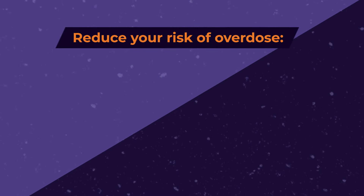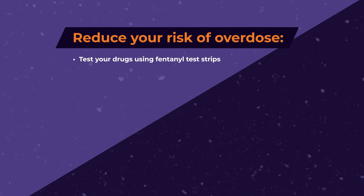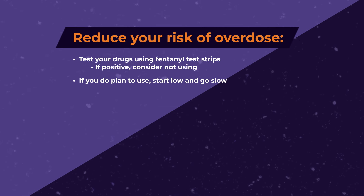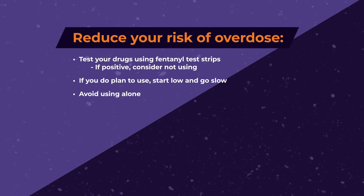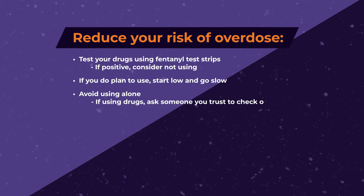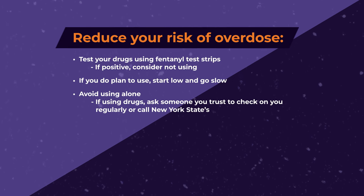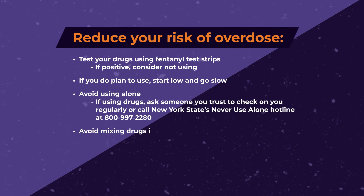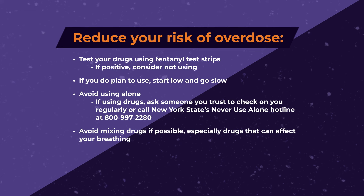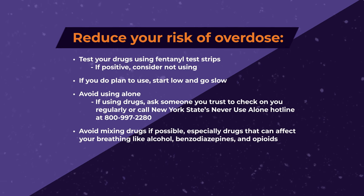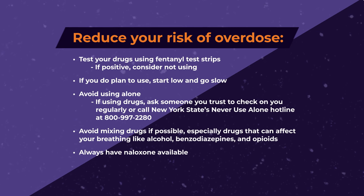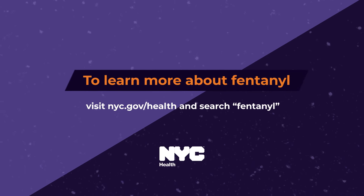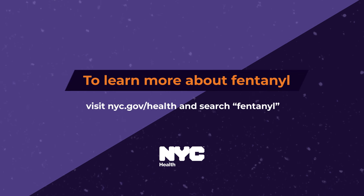Reduce your risk of overdose — test your drugs using fentanyl test strips. If positive, consider not using. If you do plan to use, start low and go slow. Avoid using alone; ask someone you trust to check on you regularly, or call New York State's Never Use Alone hotline at 800-997-2280. Avoid mixing drugs if possible, especially those that affect breathing like alcohol, benzodiazepines, and opioids. Always have naloxone available. Call 311 to find out where to get naloxone at no cost. To learn more about fentanyl, visit nyc.gov/health and search fentanyl.